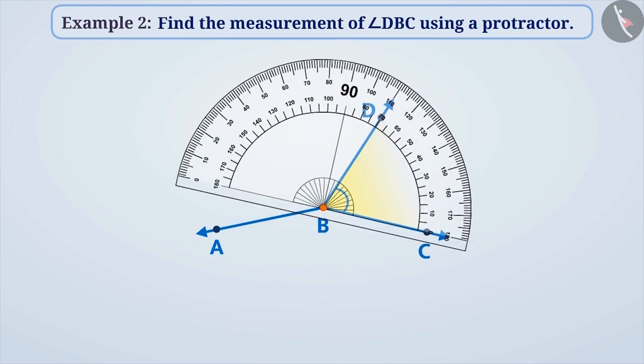we will place the protractor at an angle such that its midpoint overlaps vertex B and the line shown on its straight edge, which we also call the zero edge, completely covers any one side of the angle DBC.